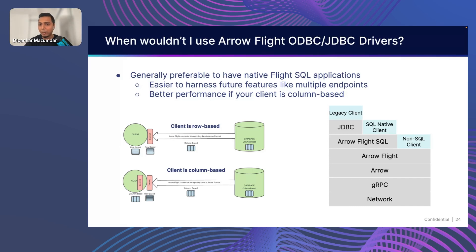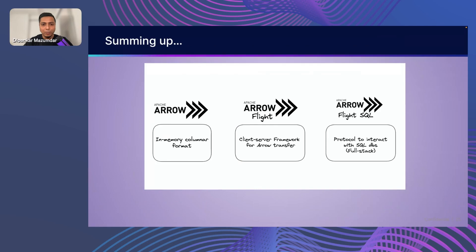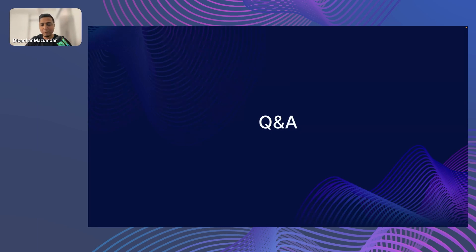Generally, the way to think about this stack: if you have a legacy client, such as old BI tools that just need to get some data or are row-based, that's where you'll use the new Arrow Flight ODBC and JDBC drivers. However, if you have a SQL native client — for example running SQL from Python code — there is a native client for Flight SQL, so you'll want to use that. And if you're not doing anything with SQL or connecting to databases, you can just use Arrow Flight natively as a protocol. To wrap up: Arrow is the columnar in-memory format that speeds up everything and helps in-memory transfers. Arrow Flight is the client-server framework that transfers that Arrow columnar format data. And Arrow Flight SQL is a protocol to interact with databases — a full stack solution. I'm open to any questions. Thank you so much.